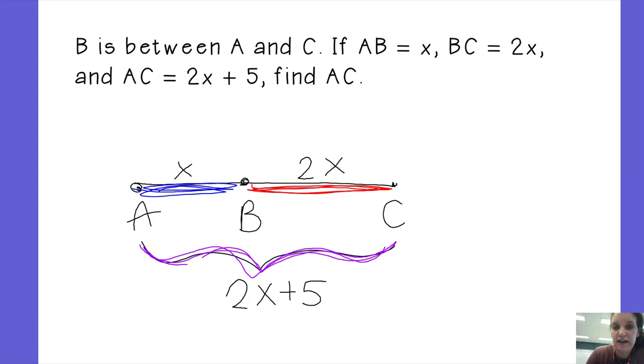Part plus part equals whole. So my first part is X, plus my second part is 2X. And that's equal to the whole thing, 2X plus 5. Or, if you want to think about it in words, part 1, part 2, whole thing. Part plus part equals whole.